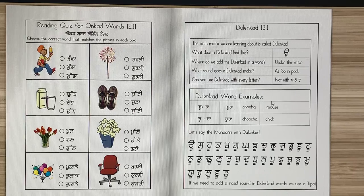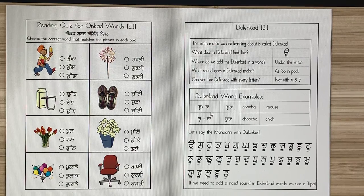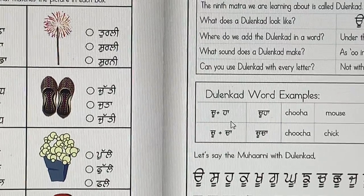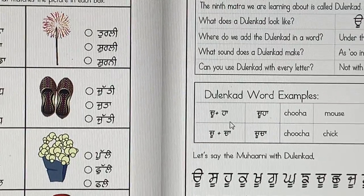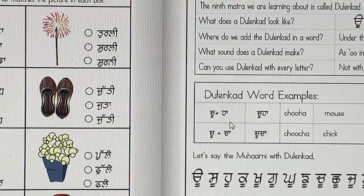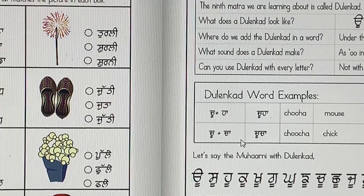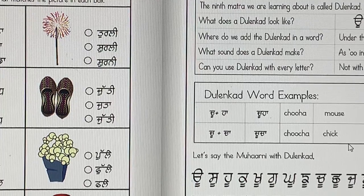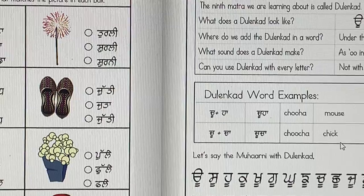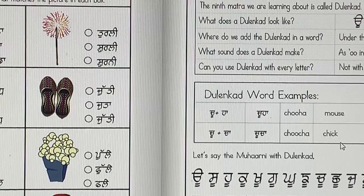There are a total of nine vowel symbols. Here are some word examples: Chuha, chuha — chuha is a mouse. Chucha, chucha — chucha is a chick, a baby chick, a cute chick.